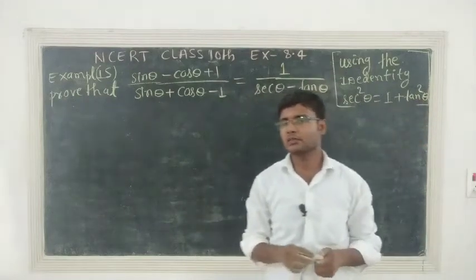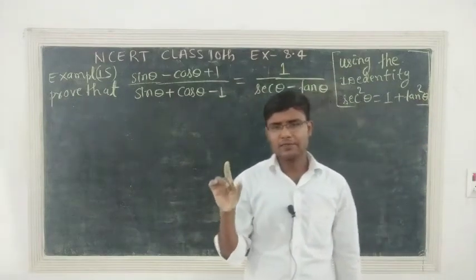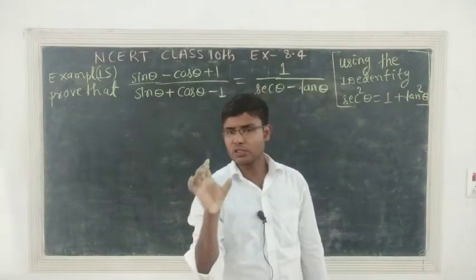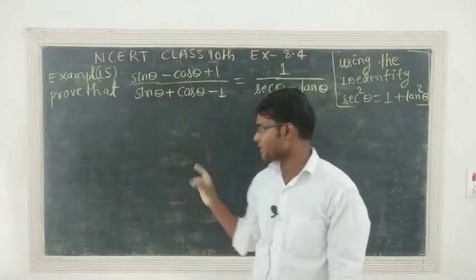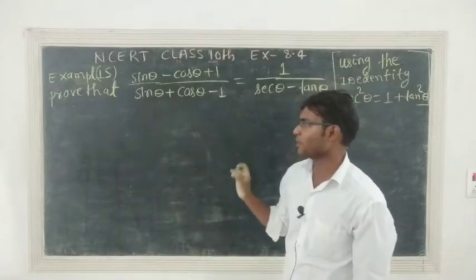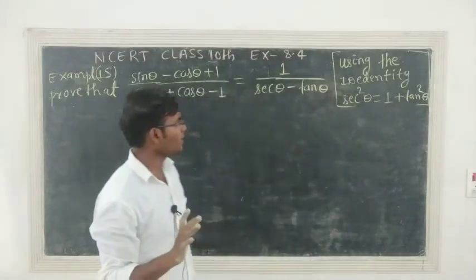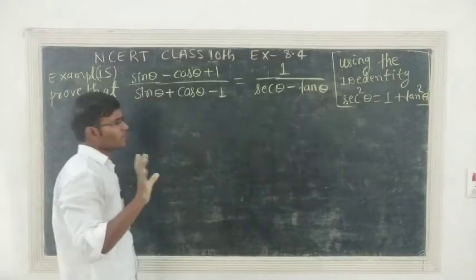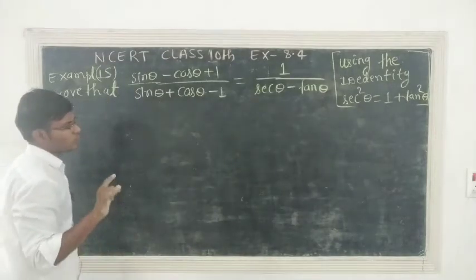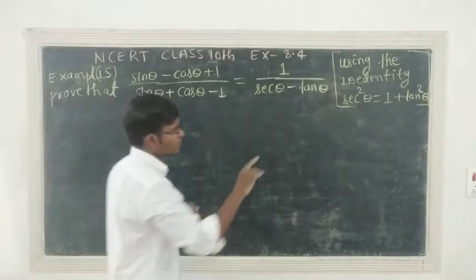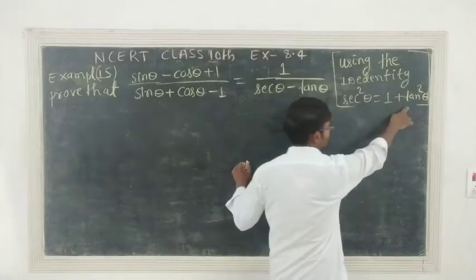Okay, now question number 5 of NCRT — based on that, NCRT example is 15. There is a lot of pattern, but the difference is so much that at that time the use of theta is equal to 1 plus cot square theta.